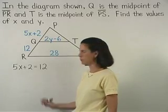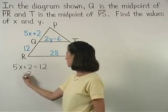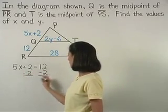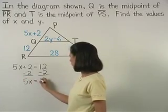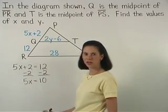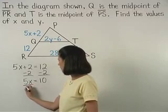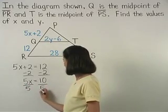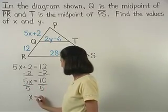Subtracting 2 from both sides gives us 5X equals 10. And dividing both sides by 5, we find that X equals 2.